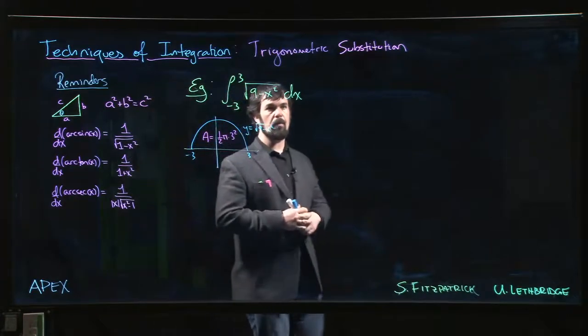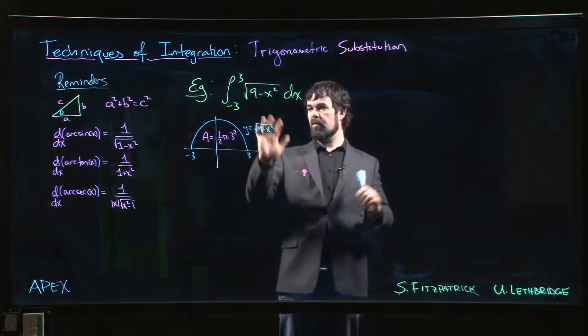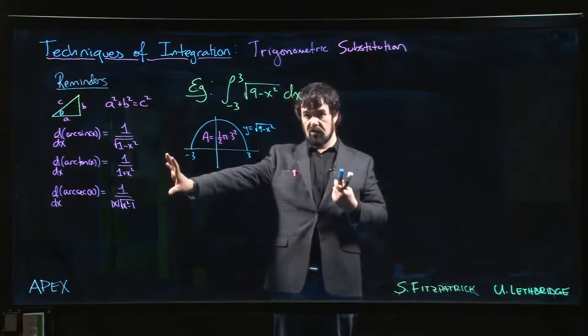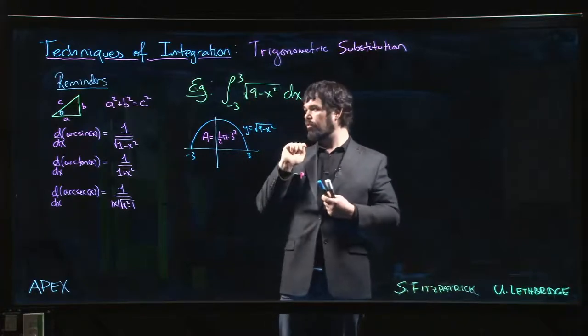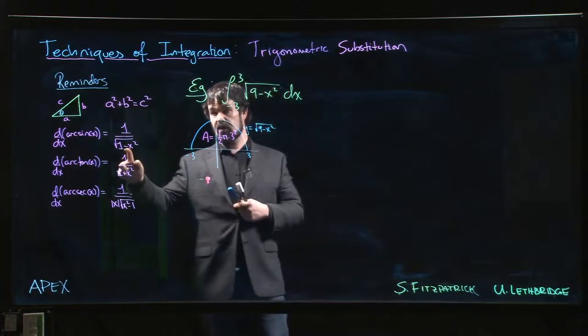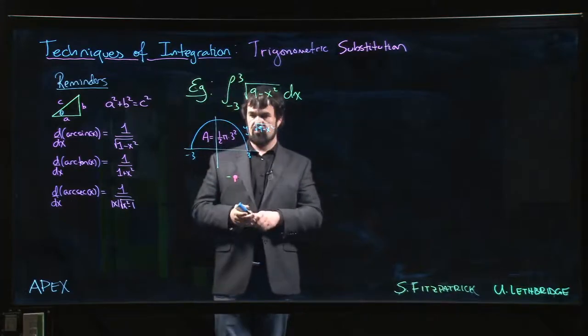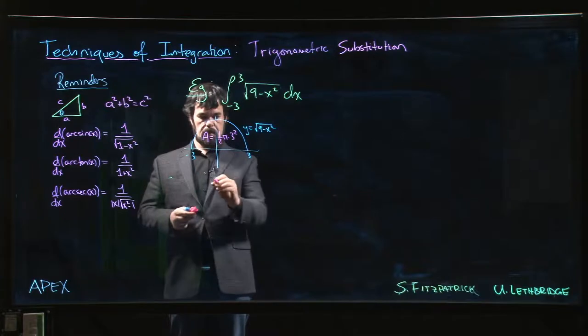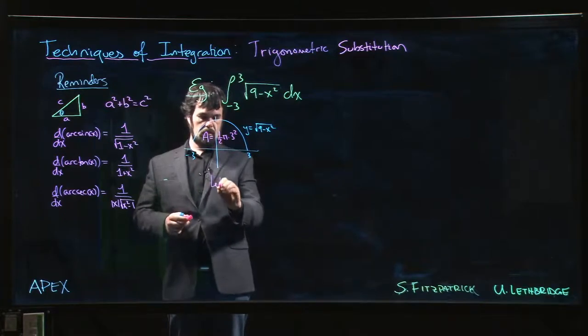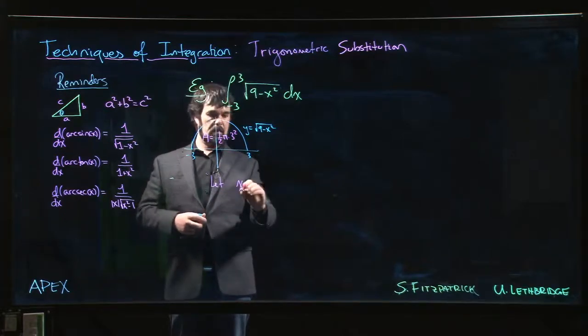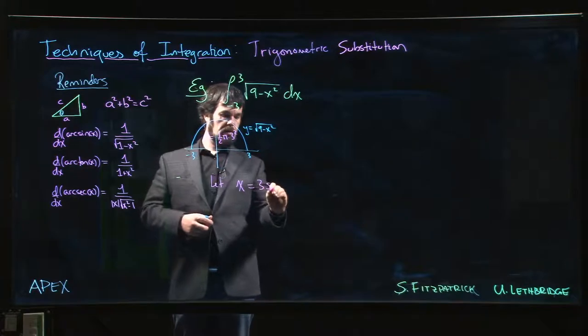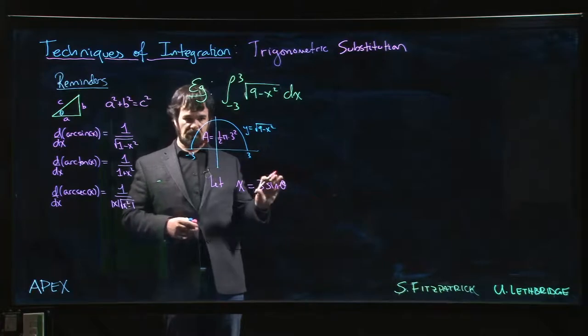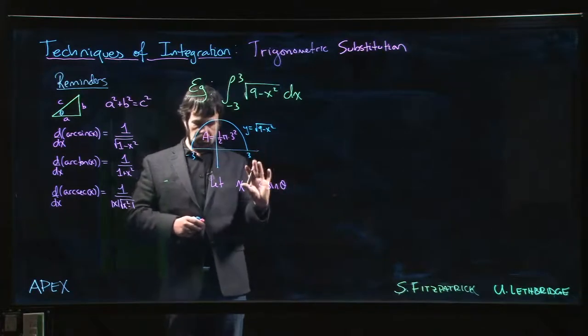So we discussed that what we do is we look for the pattern and we try to figure out which of these three it matches and that suggests the substitution. 9 minus x squared fits the pattern for arc sine. So the substitution that we want to make is we want to let x equal to 3 sine theta, which is really saying that theta is arc sine of x over 3.